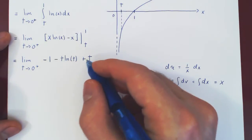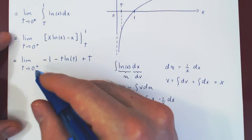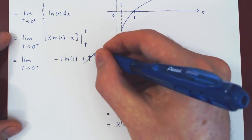So there are two parts here, there is the t, and there is the t ln of t. Well, this part is trivial, as t approaches 0, t approaches 0, this term goes away.